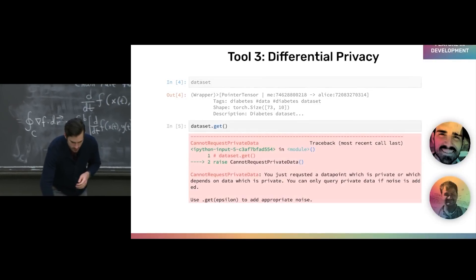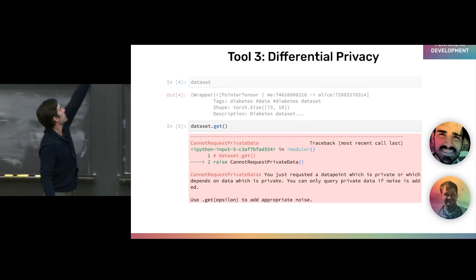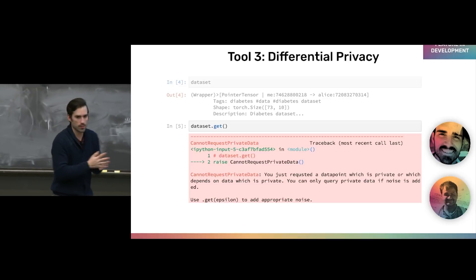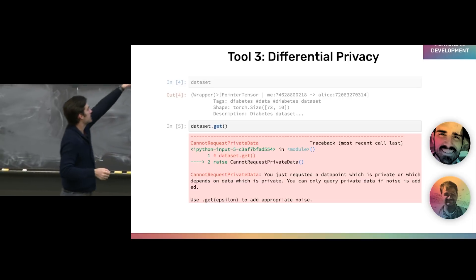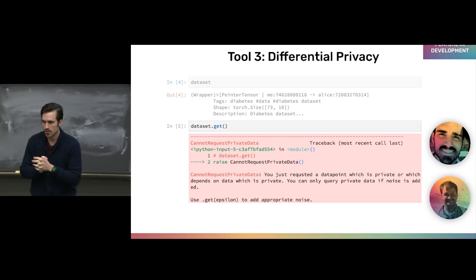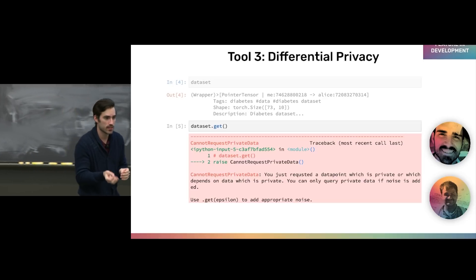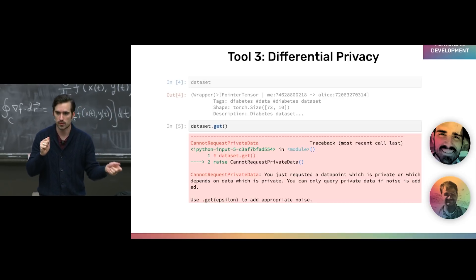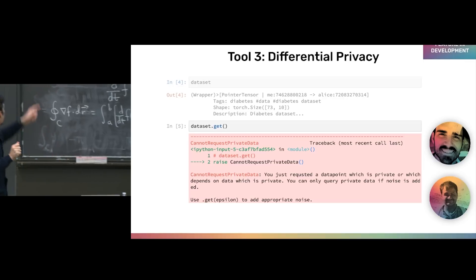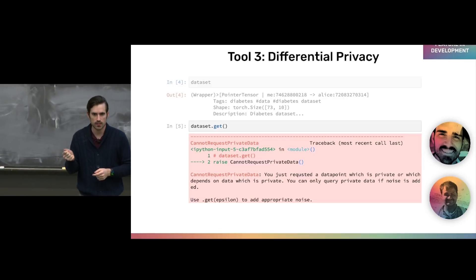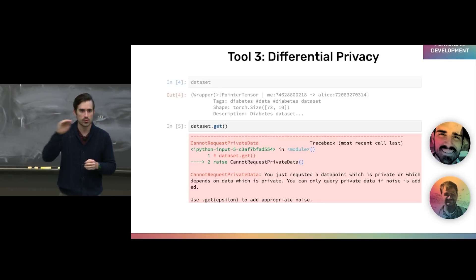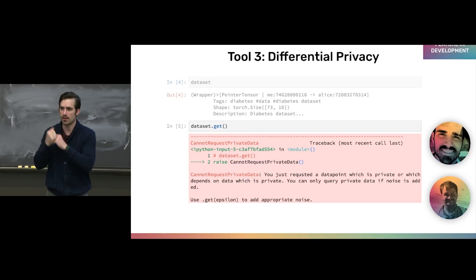So what does this look like in code? We have a pointer to a remote private dataset; we call dot get — and we get a big fat error. You asked to see the raw value of some private data point, which you cannot do. Instead, pass in dot get epsilon to add the appropriate amount of noise. I mentioned sensitivity — that's related to the type of query and its invariance to removing or replacing individual entries. Epsilon is a measure of what we call our privacy budget: it's an upper bound on the statistical uniqueness I'm going to allow to come out of this database.